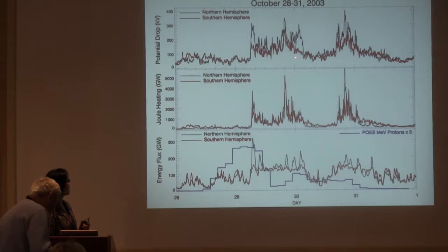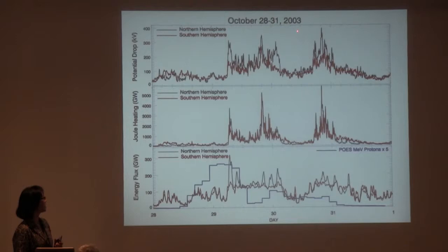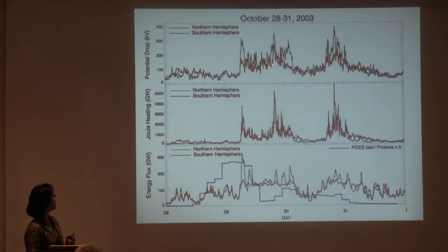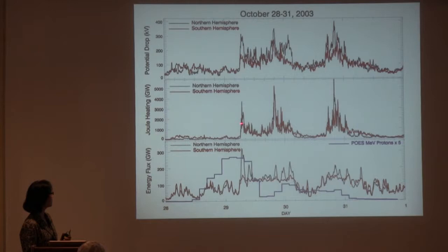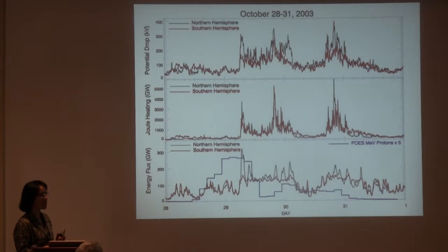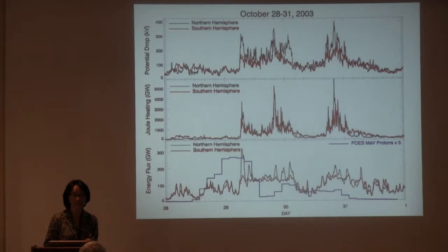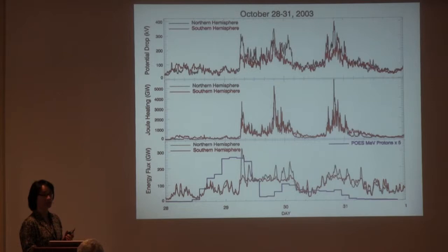To illustrate those effects, I'll show simulations from the well-known Halloween storm in 2003. The top panel shows the potential drop in both hemispheres derived from AMIE, with a peak reaching about 350 kilovolts, which is very, very strong. The middle panel shows the hemisphere-integrated Joule heating dissipation into the upper atmosphere, peaking on October 30th at more than 5 terawatts. Considering that the total power consumption of the entire United States is about 800 gigawatts, that energy dissipation is really enormous — only if we could find a way to harvest it, that would be very economically beneficial.